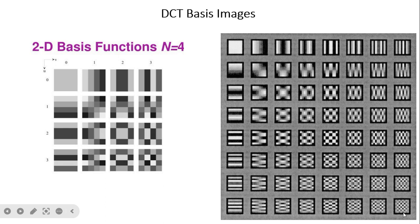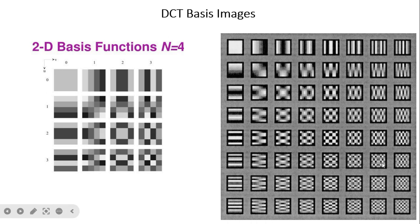For the 64-component case, at the start we get purely low-frequency components and at the end purely high-frequency components, with mixed components in between. In an image, most energy or information is captured by low-frequency components, so we retain those. The high-frequency components carry very little energy or visual information, so we can discard them in lossy compression.